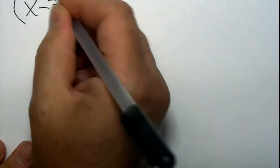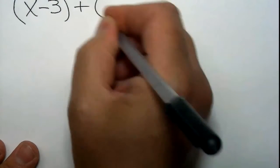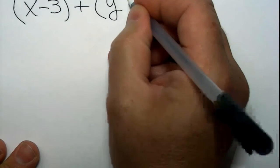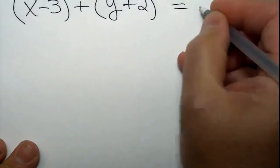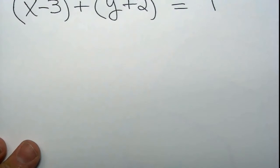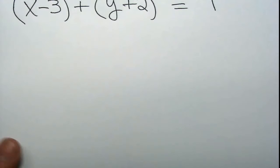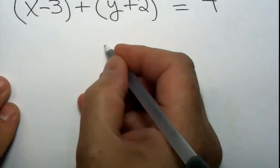So let me give you an example of the equation of a circle in standard form. If I were to give you this equation: x minus 3 squared plus y plus 2 squared is equal to 4 — what is that locus or collection of points that I'm referring to? Well, let's find out.